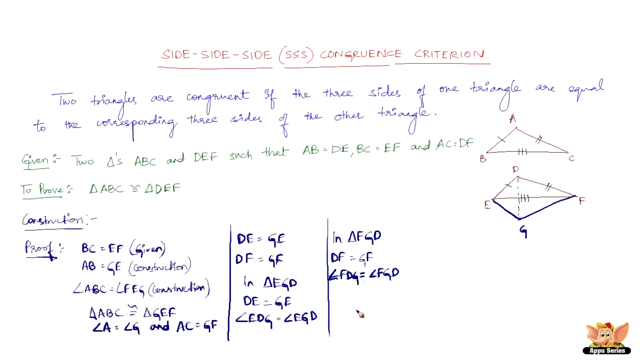So now we have angle EDG plus angle FDG equals angle EGD plus angle FGD. So now we have angle D and this will be angle G. Based on this we can say that angle D equals angle G, but we have angle G equals angle A. Therefore we can say that angle A equals angle D.